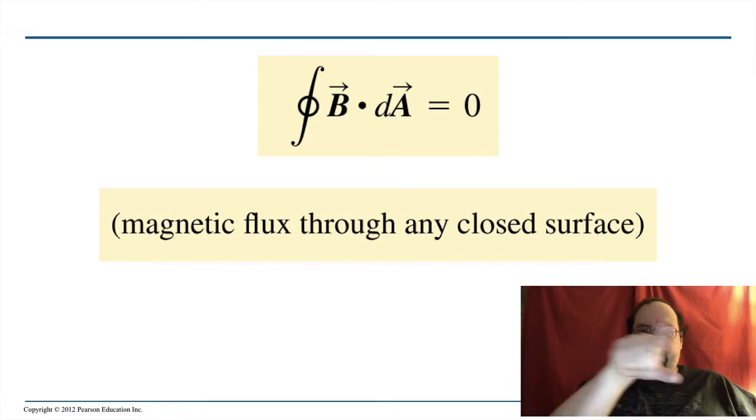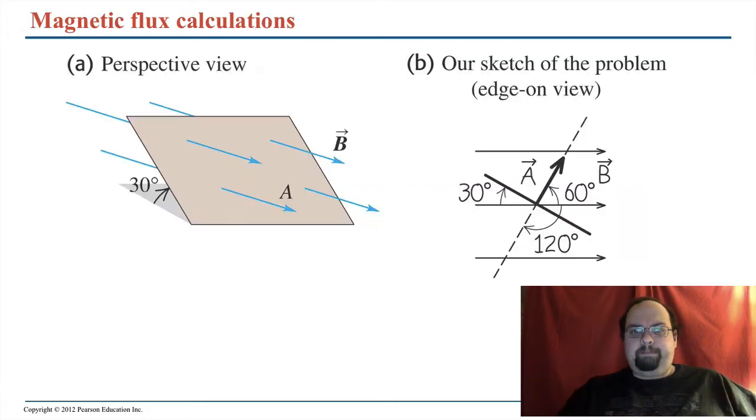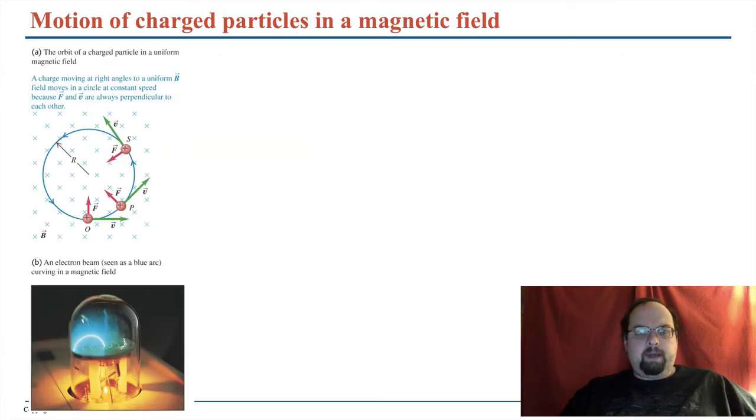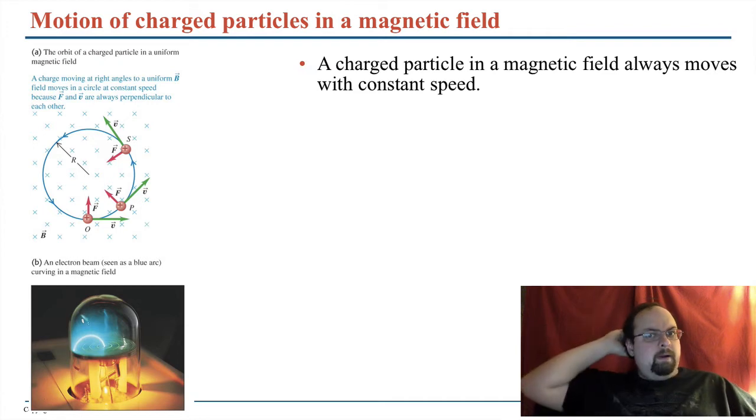So that little symbol there around your integral sign means it's a closed loop around dA. So here's a shape that isn't enclosed. It's just a piece of area. So you can have some flux that isn't zero. You've got a B and you've got an A and the angle between them in this case is, well, it looks like 60 degrees, right? Because dA is perpendicular to that surface and the 30 degrees was to the table or something.